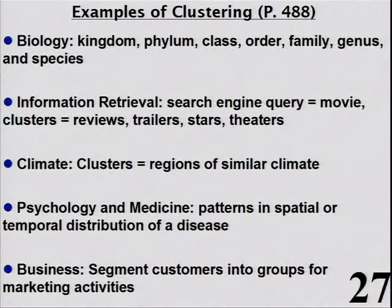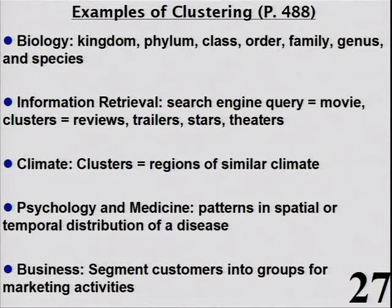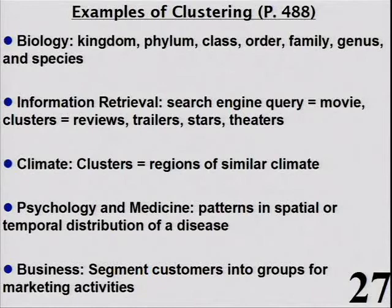In information retrieval, someone queries 'movie' and user intents fall into four categories: theaters, stars, trailers, reviews. Webpages about theaters look similar to each other and different from those about stars. In climate, there are regions of similar climate with no hard boundary but obvious groupings. In business, you always segment customers — 20-to-30-year-olds have different buying patterns than 30-to-40-year-olds. The boundary is somewhat arbitrary but the segmentation is useful.